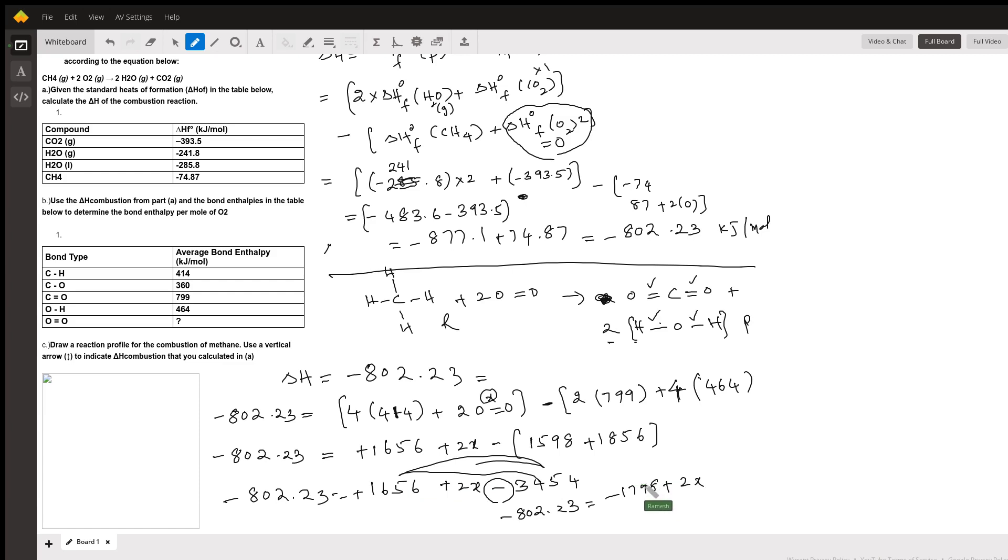So to solve for x, add 1798 both sides. So this cancels out. So this cancels out. So 1798 with a positive sign minus 802.23. That is positive 995.7 equals to 2x, 2 moles of oxygen. So if I solve for x, divided by 2, that should give you the bond enthalpy value of oxygen oxygen double bond as 497.85 kilojoules.